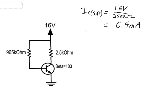The second extreme is VCE_off — the voltage between the collector and emitter when no current is flowing. With no current through the resistor, the collector point is also at 16 volts and the emitter is at ground, so we have 16 volts right across the transistor.